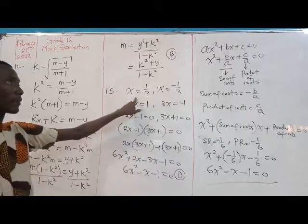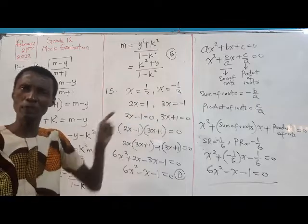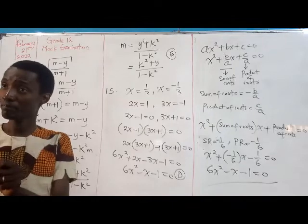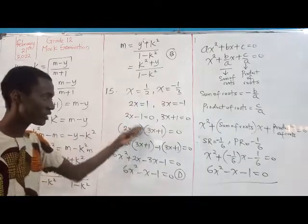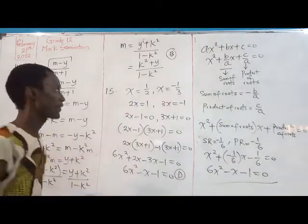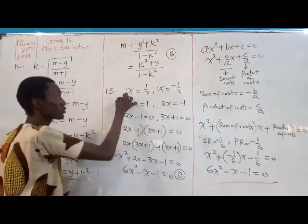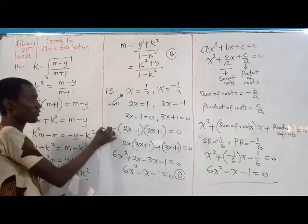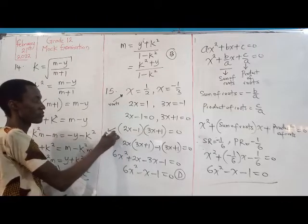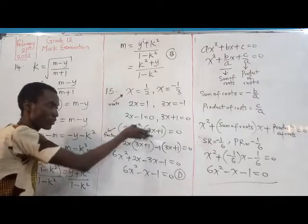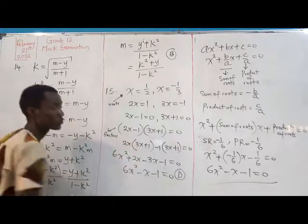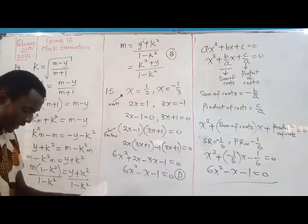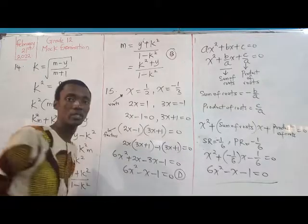For those offering Further Mathematics, this connects to polynomials and the remainder theorem. The process starts with roots, you obtain factors, multiply the factors, and equate to zero. Whichever method appeals to you — the answer is D.